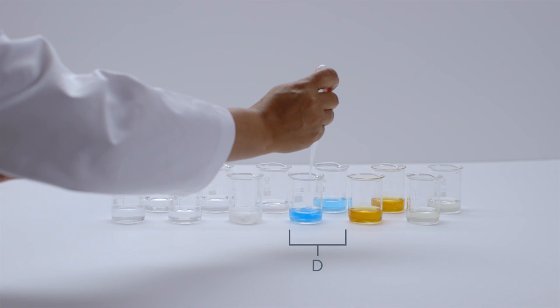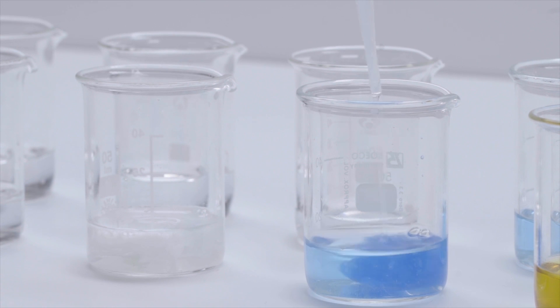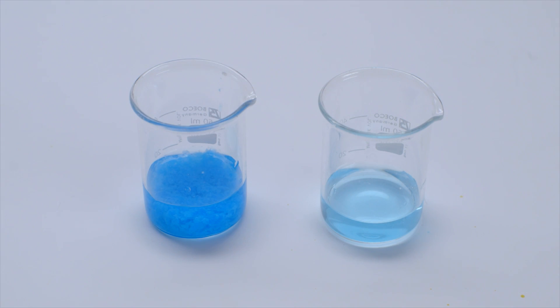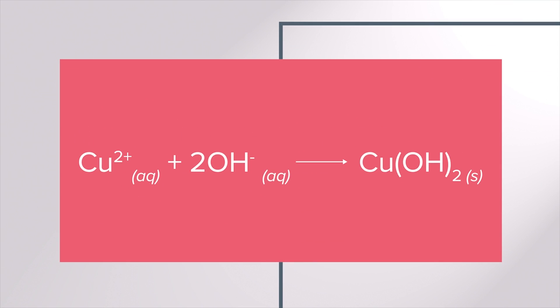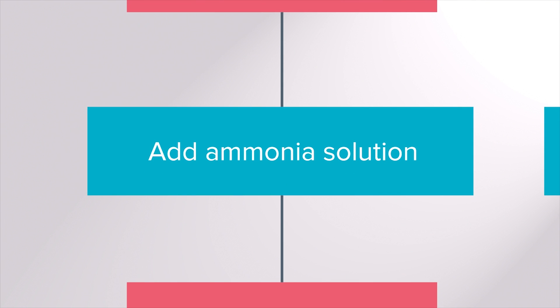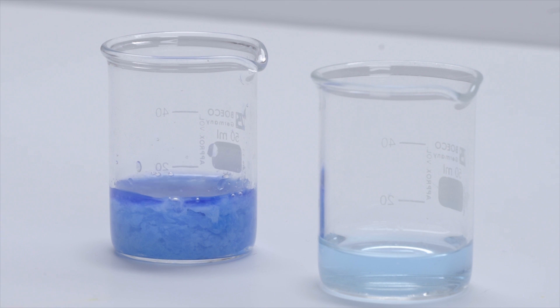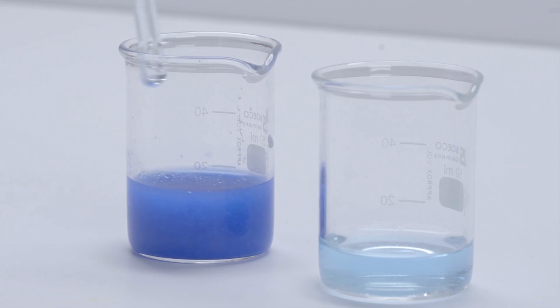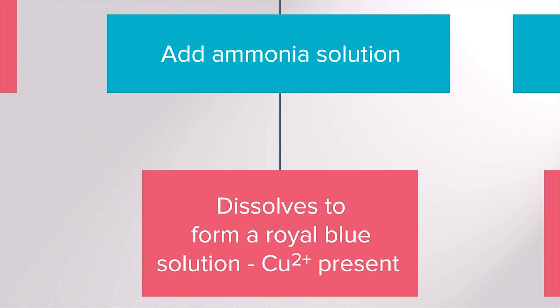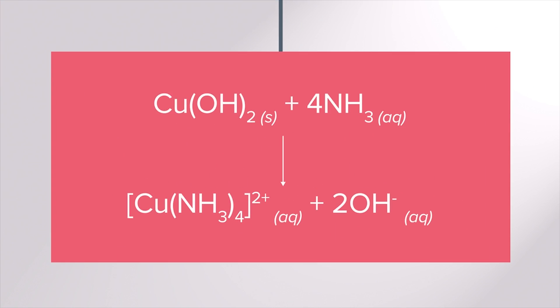If the precipitate appears to be a blue gelatinous substance it may contain Cu²⁺ ions and the precipitate formed is copper hydroxide. For confirmation some ammonia solution needs to be added and if the solid dissolves to form a royal blue solution then Cu²⁺ ions are present as the colour is due to the formation of the copper ammonia complex ion.